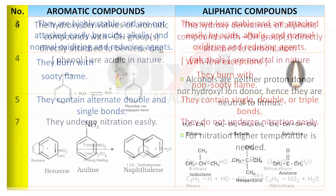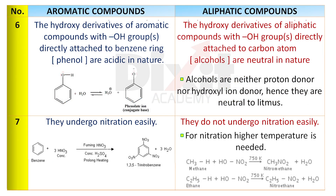Point 6: The hydroxy derivatives of aromatic compounds, with the OH group directly attached to the benzene ring, are called phenols. They are acidic in nature. The hydroxy derivatives of aliphatic compounds, with the OH group directly attached to a carbon atom, are called alcohols. They are neutral in nature — alcohols are neither proton donors nor hydroxyl ion donors, hence they are neutral to litmus.